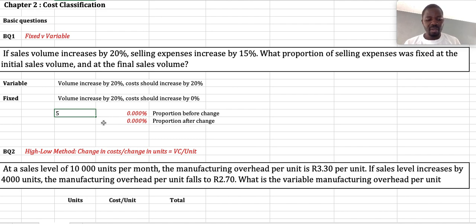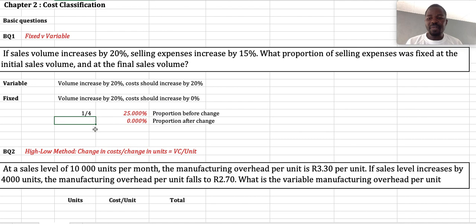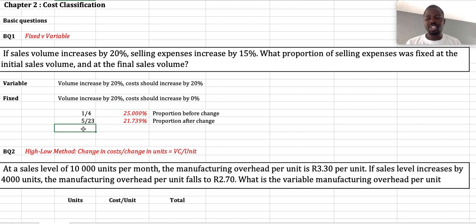The 5% out of 20% did not increase — that was the fixed cost before the change. That is one quarter, or 25%. Then after the increase, the fixed cost remains at 25%, but the total costs are now 100 initially plus 15% increase, so it's 115. The proportion becomes 5 over 115, or 21.739%.